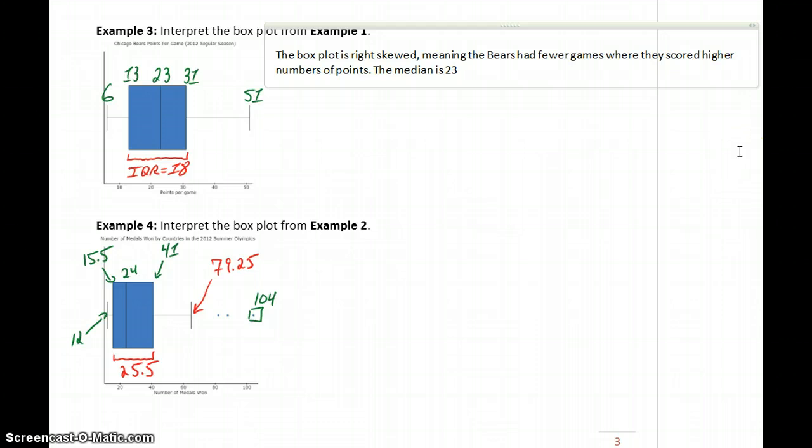The median in this case, or the center, is 23, meaning they scored on average—using average to refer to either median or mean, whichever is appropriate for the data we're considering. In this case, for box plots, we're talking about the median, meaning they scored on average 23 points per game.